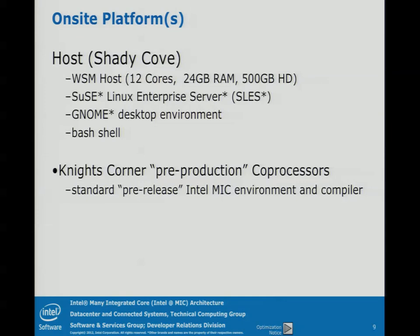A little bit about the platforms you're going to see — you're going to have access to them. We have two of them here locally. They're Westmere-based platforms; the hosts have 12 cores, 24 gigabytes of RAM, and a 500 gigabyte hard drive. These have SLES on it — that'll be release 11, Rev 1 or something like that — with a GNOME Desktop Environment and Bash Shell. You're going to be guided through your usage, so that's not critical.